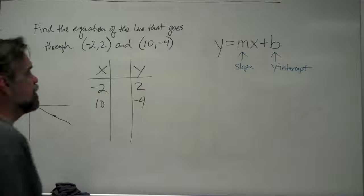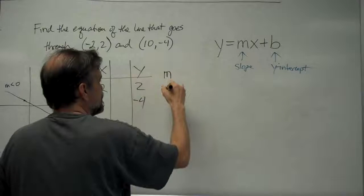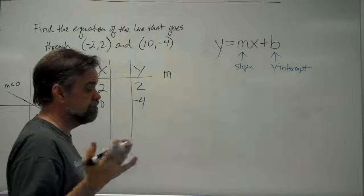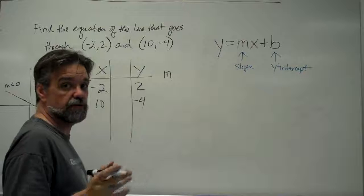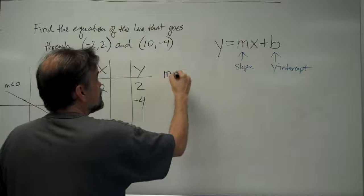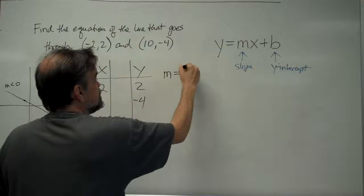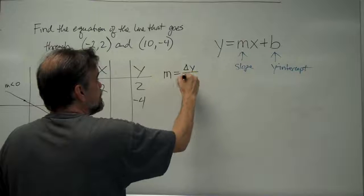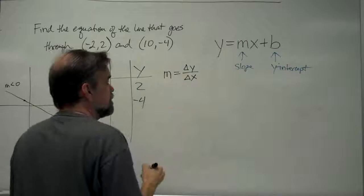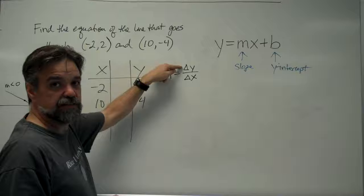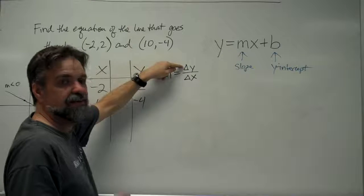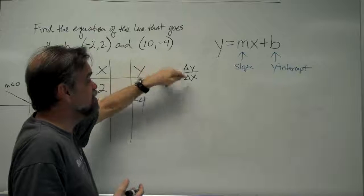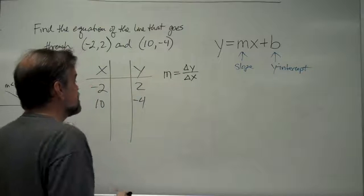And our slope, the slope which is abbreviated by m—beats me why, I have no idea. If you know why, please let me know, I would like to know. The slope is defined to be the change in y divided by the change in x. That little triangle there means delta, it's a Greek letter delta that means the difference. The difference in y divided by the difference in x.